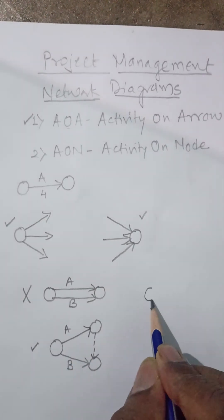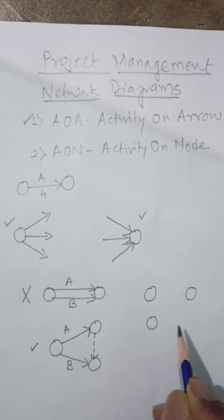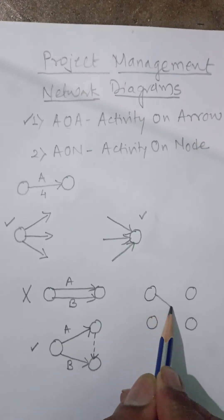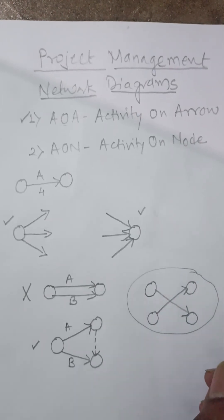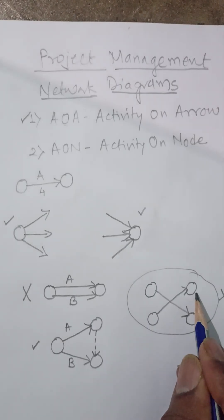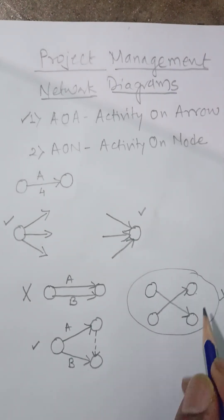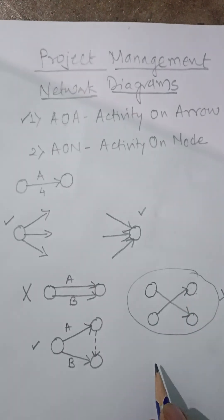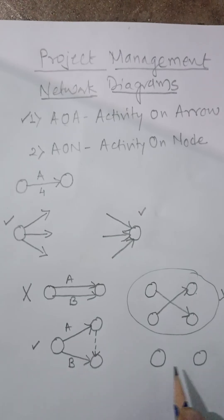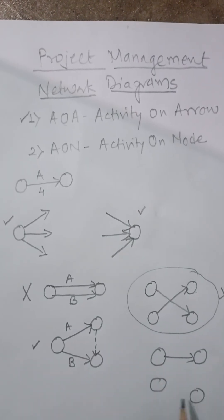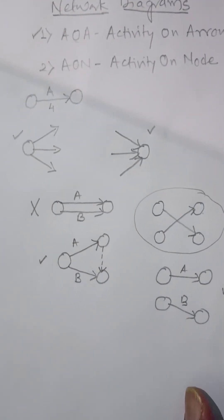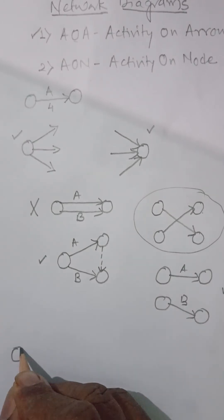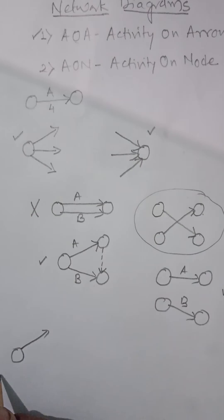You should also avoid the crossing of activities. If activity A and activity B cross each other, that is the wrong way of drawing them. Instead, change the position of one of the nodes so that the two activities are shown separately without crossing each other. This is the correct way of showing two activities.